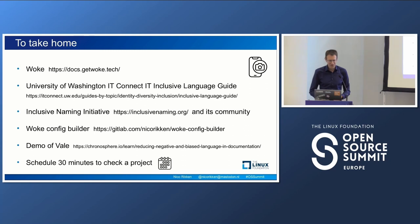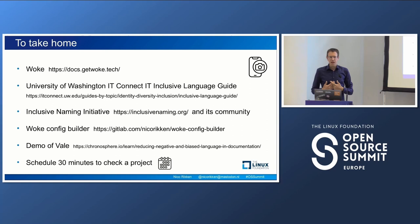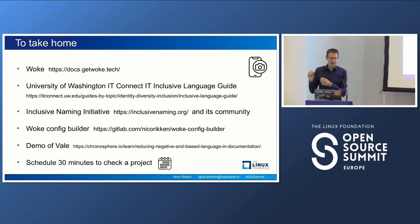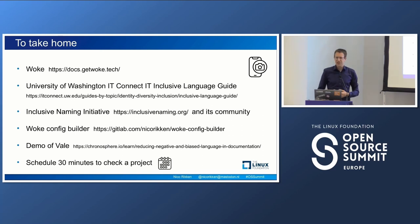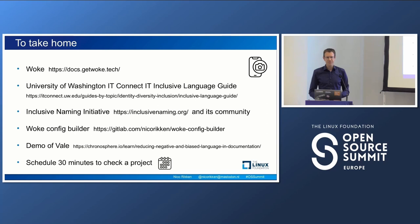This is what I want you to take home — please take a picture of these resources that helped me and can help you. Also check Vale as an alternative to woke. Please set aside 30 minutes — next week or the week after — to work on this. Take a project you like and start checking it. You'll have to read up on non-inclusive words, and it will be a very valuable learning exercise whether you do it manually or automatically.